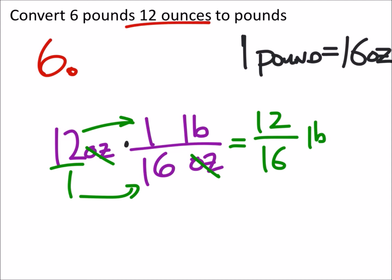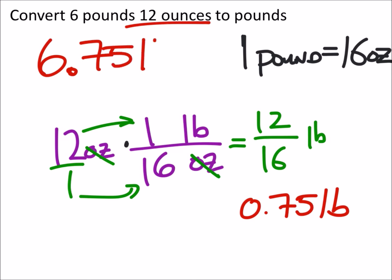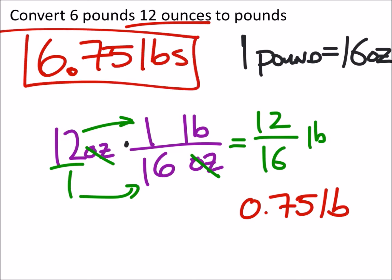12 divided by 16 equals 0.75 pounds, so the answer is 6.75 pounds. If they wanted a mixed number, we'd divide both by four, giving us three-fourths. So 6.75 pounds will work.